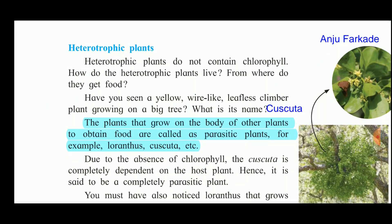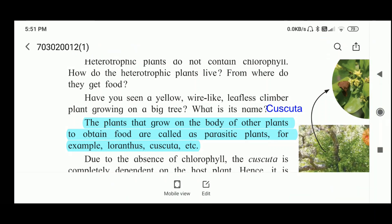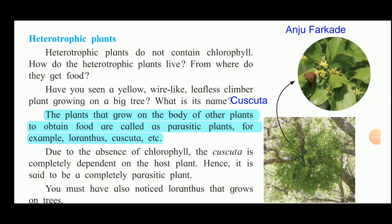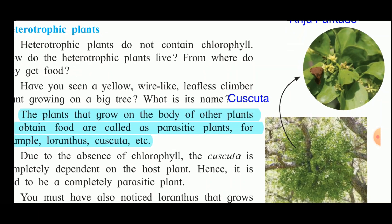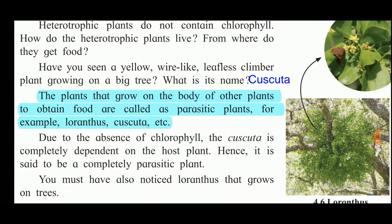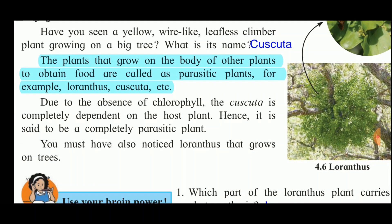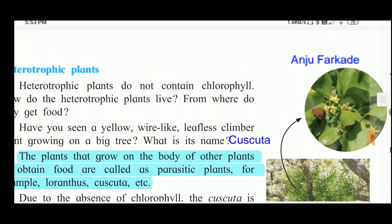Next we look at heterotrophic plants. Heterotrophic plants do not contain chlorophyll, so they cannot make their own food. You must have seen the yellow, wire-like, leafless climber plant growing on a big tree like mango — that is called Cuscuta. Plants that grow on the body of another plant to obtain food are called parasitic plants. Examples are Loranthus and Cuscuta.